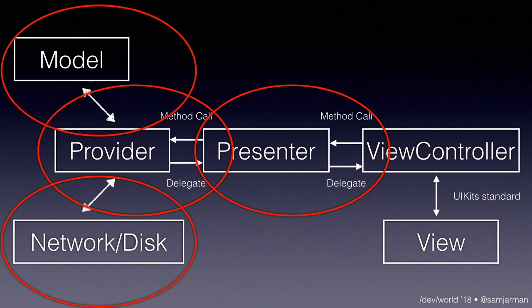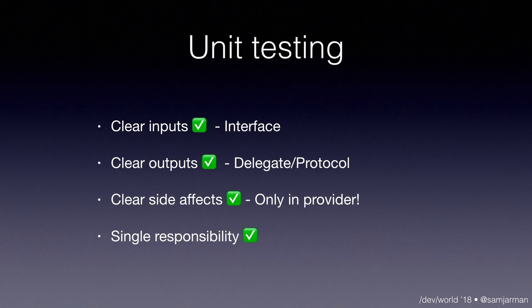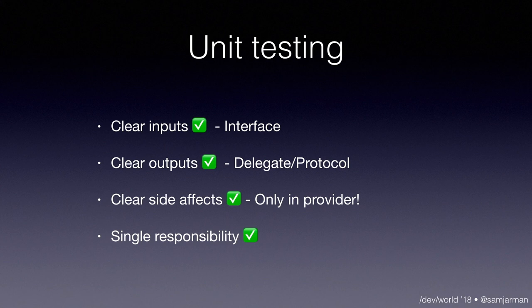So let's talk about the units. I've put big red circles around what I believe are the units. The big unit is the presenter — we talked about clear inputs and outputs. In my version of MVP, I don't bother testing the view controller or the view; I leave that to UI testing or manual testing. The provider is another really easy unit to test — clear input, clear output, limited side effects. With this architecture we have clear inputs, clear outputs, and clear side effects — which is only the provider. We just need to stub that so it stops going to the network. All these things have a single responsibility.